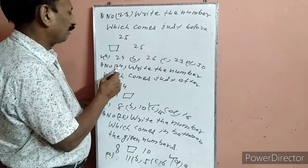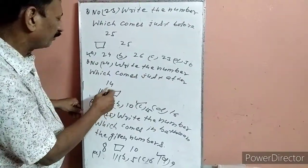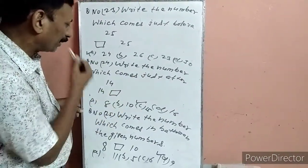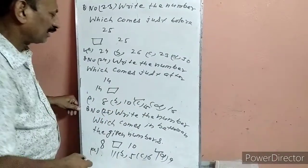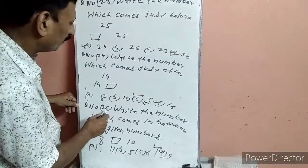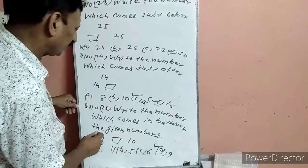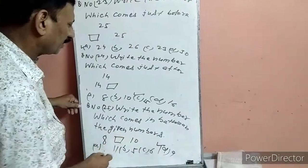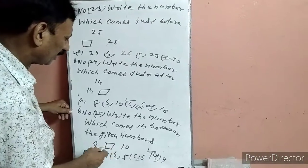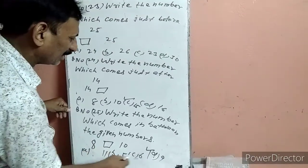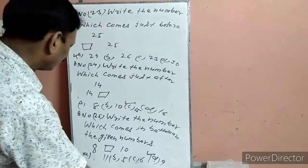Question 24: Write the number which comes just after 14. 14 के तुरत बाद कौन सा number आता है — 15. C पर हमने टिक लगा दिया. Question 25: Write the number which comes in between — जो 8 और 10 के बीच में है — 9 का option D है. D पर हमने टिक लगा दिया.